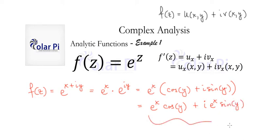if we compare this to this, we see that we've got it in the form u of xy plus i times v of xy. So all we have to do is find ux and then vx and then do ux plus i vx, and that's going to be f prime.